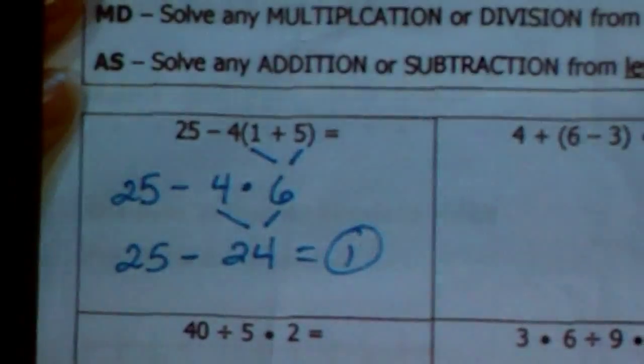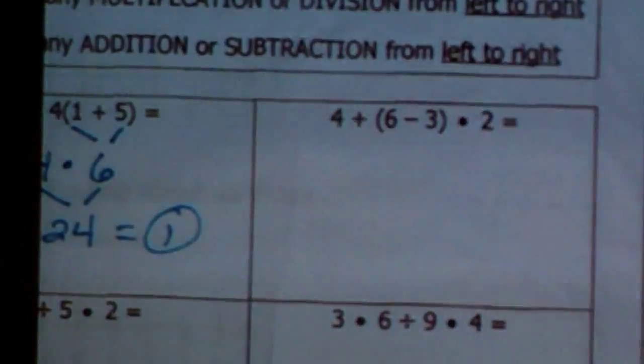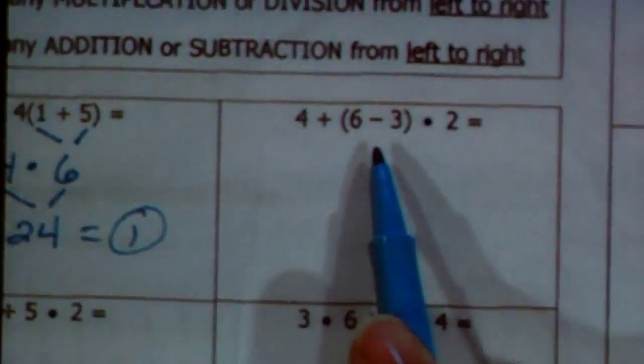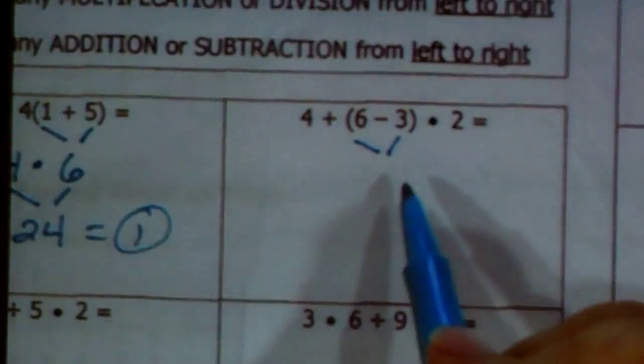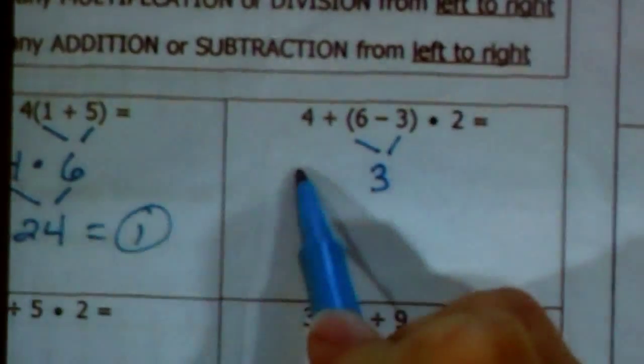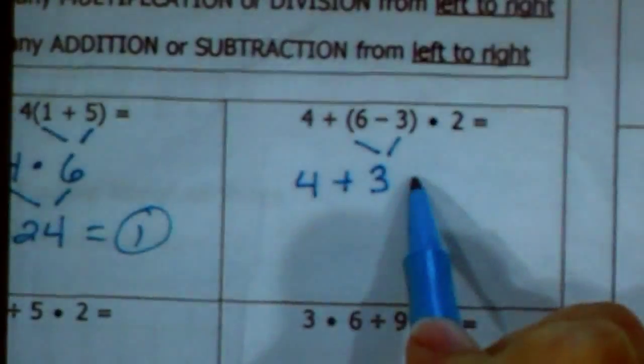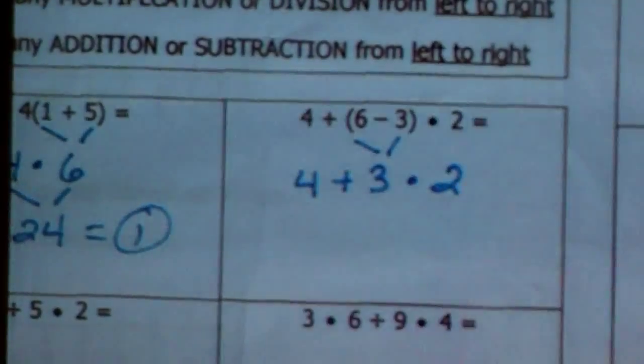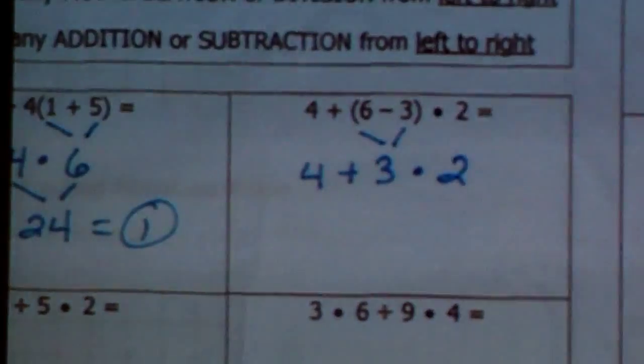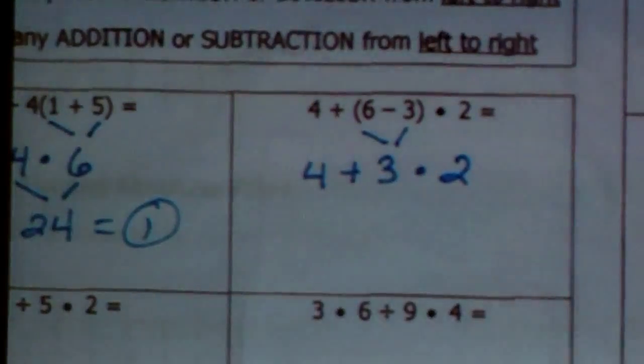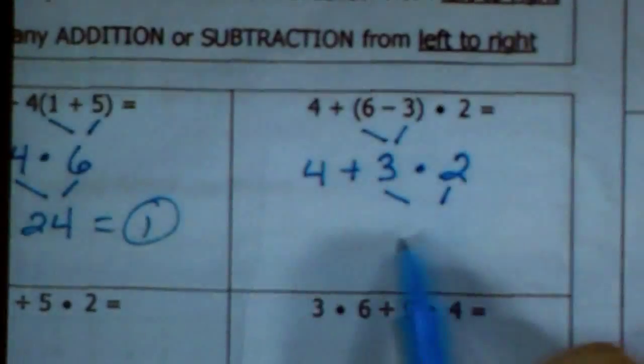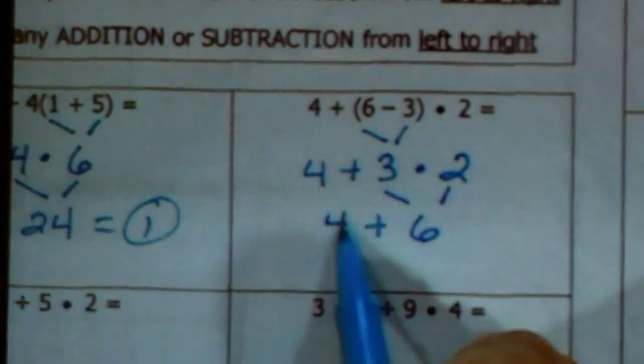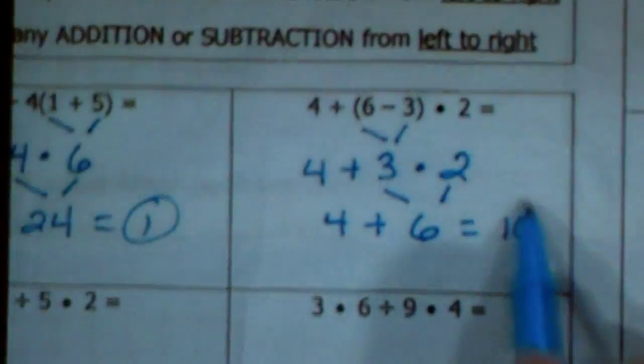All right, our next example. We have addition, parentheses, and multiplication. We are going to always do parentheses first. 6 minus 3 is 3. I'm going to rewrite everything. It's always a good idea to keep everything very in order. Now I have addition and multiplication. Multiply first. 3 times 2 is 6. I'm going to add that to 4. 4 plus 6 is 10.